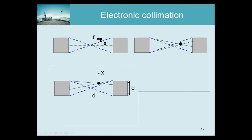Another question is: what happens if I put a point source exactly in the middle — what sensitivity do we have? How to compute it: for symmetry, if one photon hits the crystal, the other photon emitted in the opposite direction will also hit the crystal. So we can look at one detector and compute d squared divided by the radius squared, then times two because there is a detector on the other side.